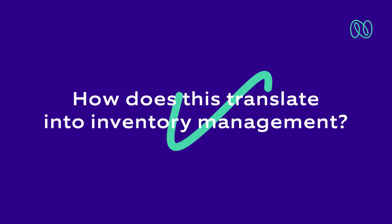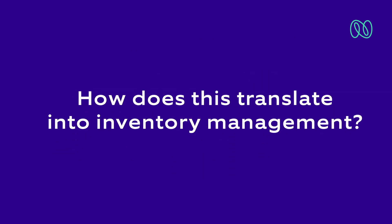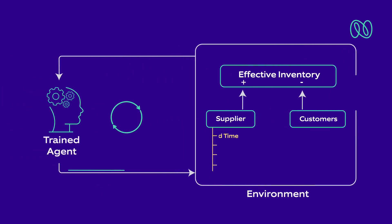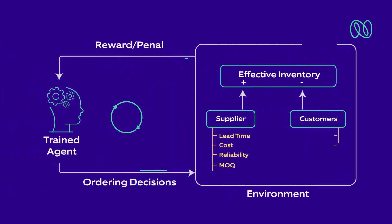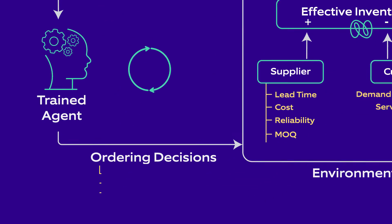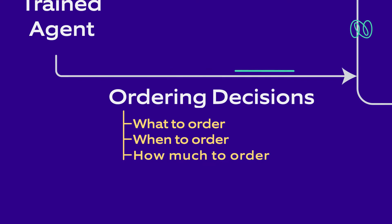How does this translate into inventory management? The rules are determined by demand and supply factors. The decisions that the agent takes pertain to ordering: what to order, when to order, and how much to order.